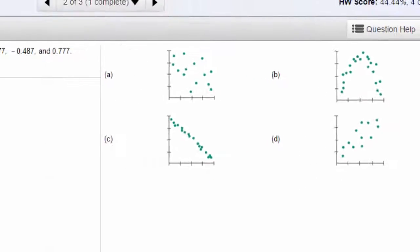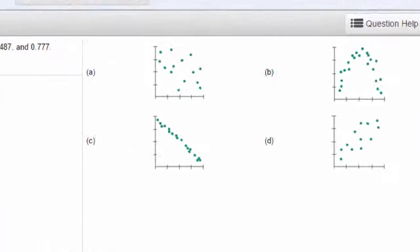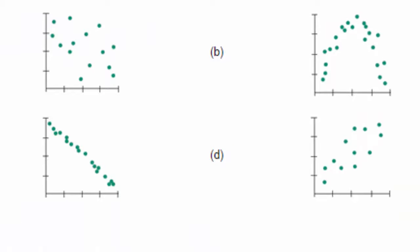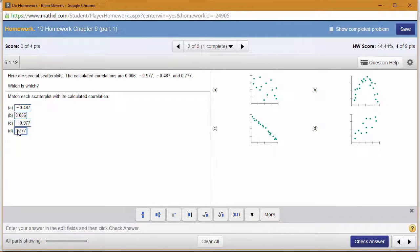The last one is the strong positive linear correlation, and we can see it right there. Once again, the sign is whether it's positive or negative, and the stronger it is, the closer it is to negative one or positive one.